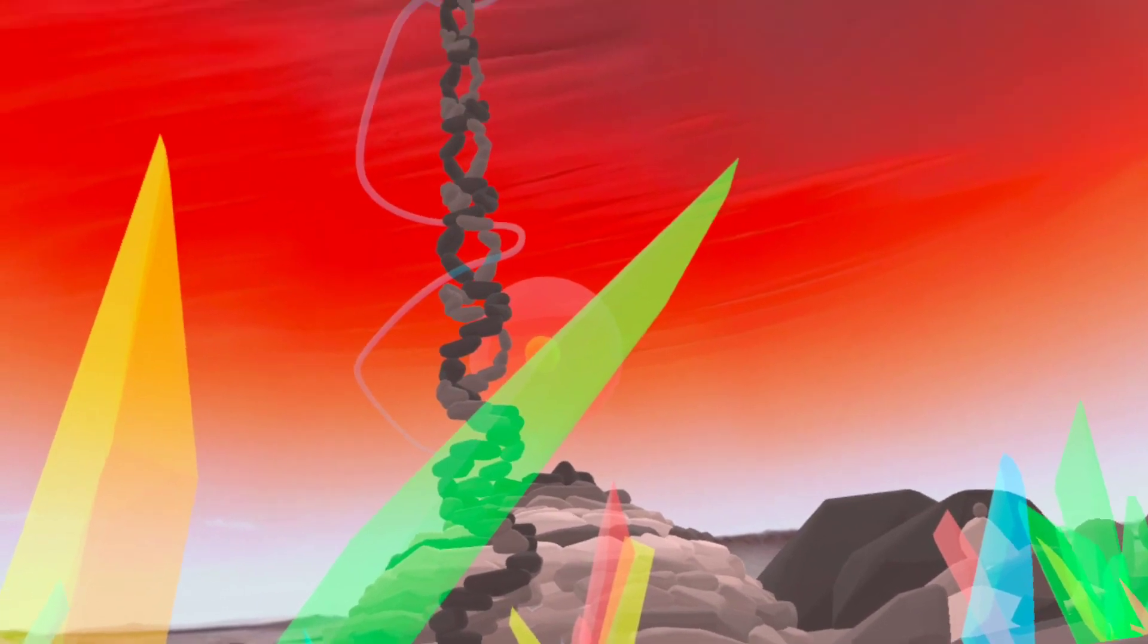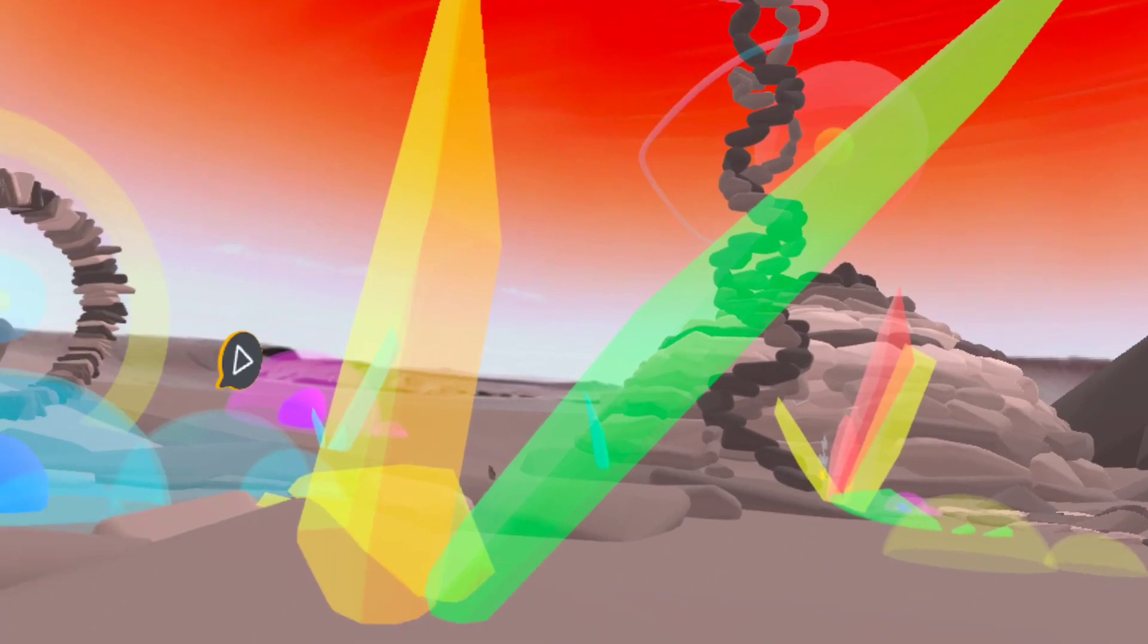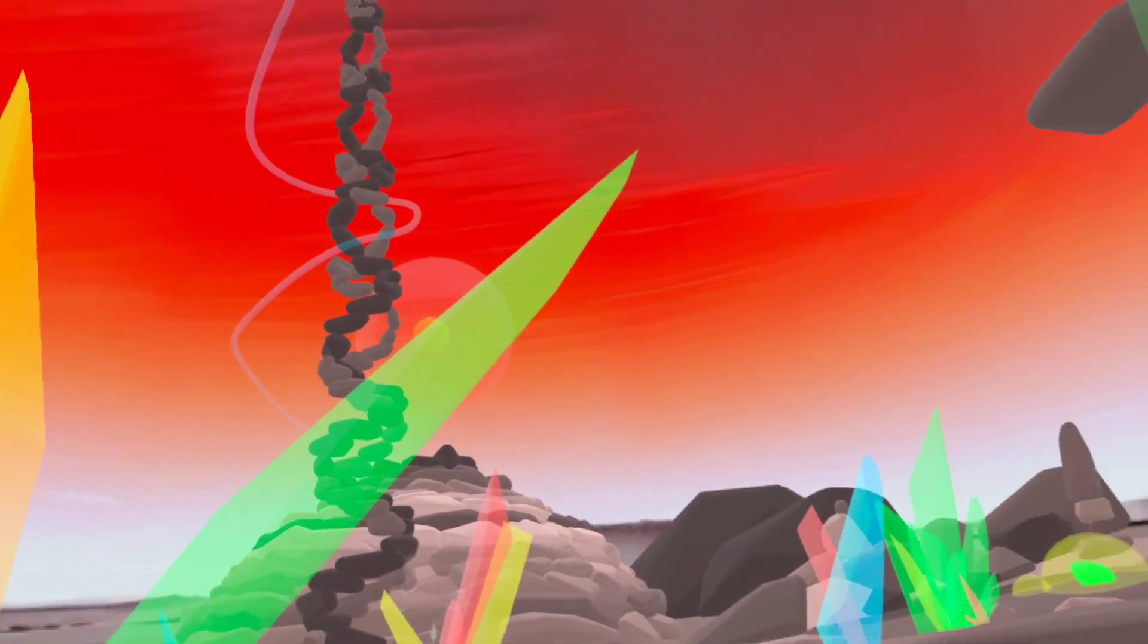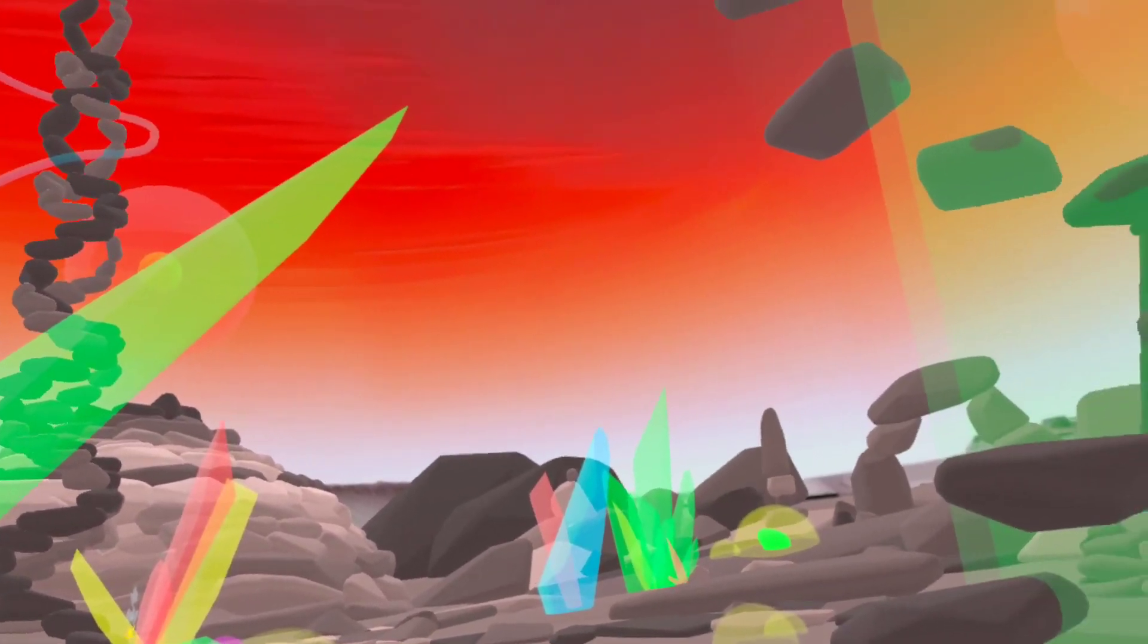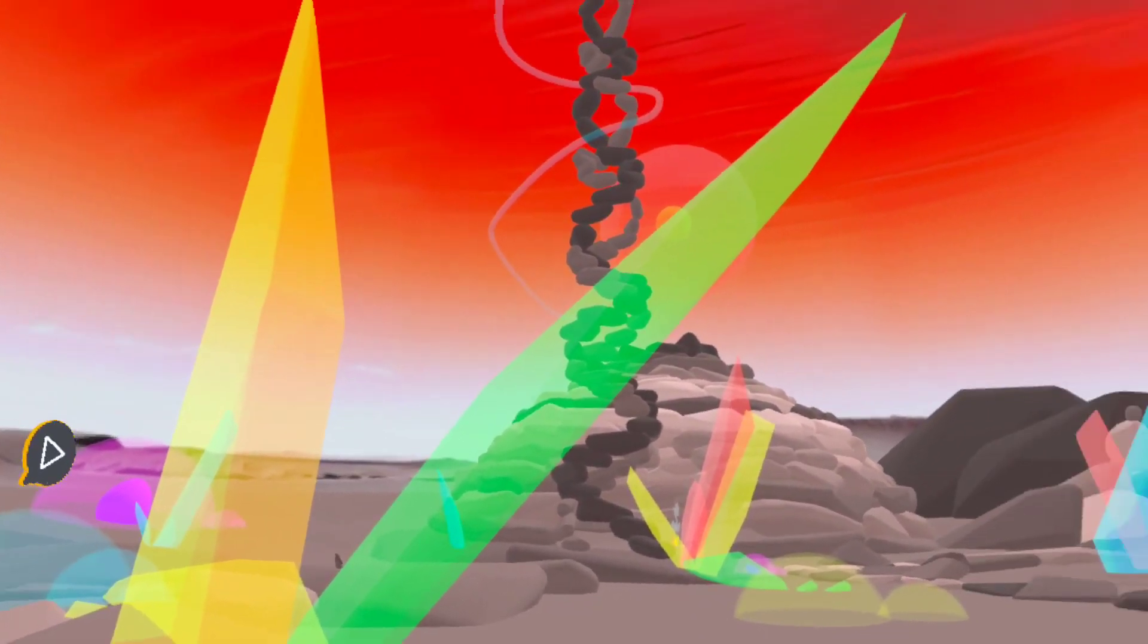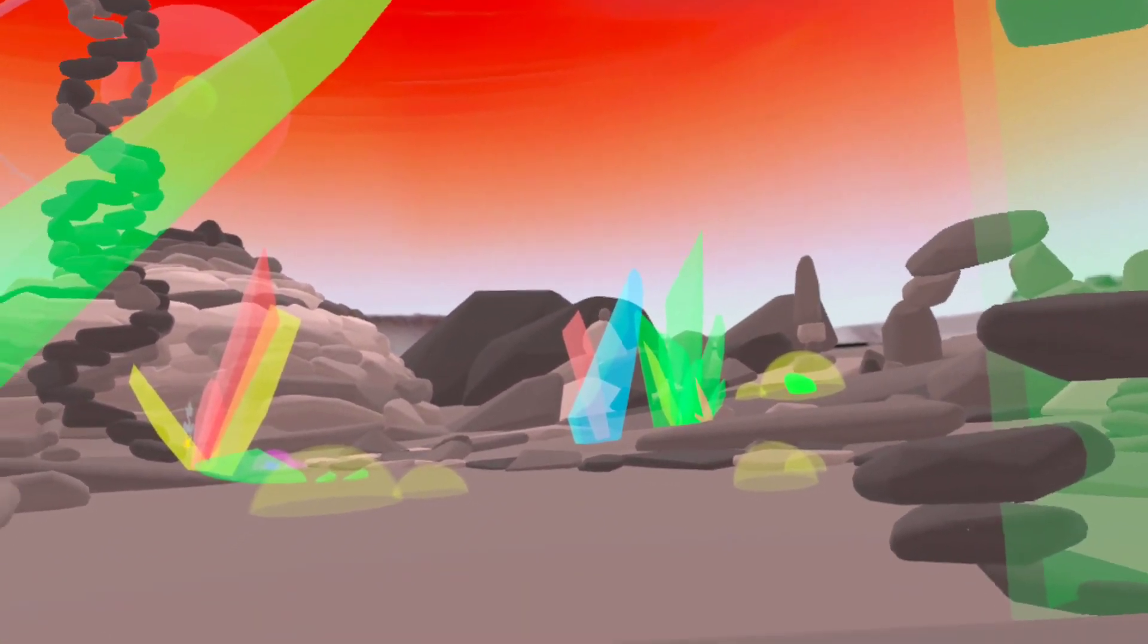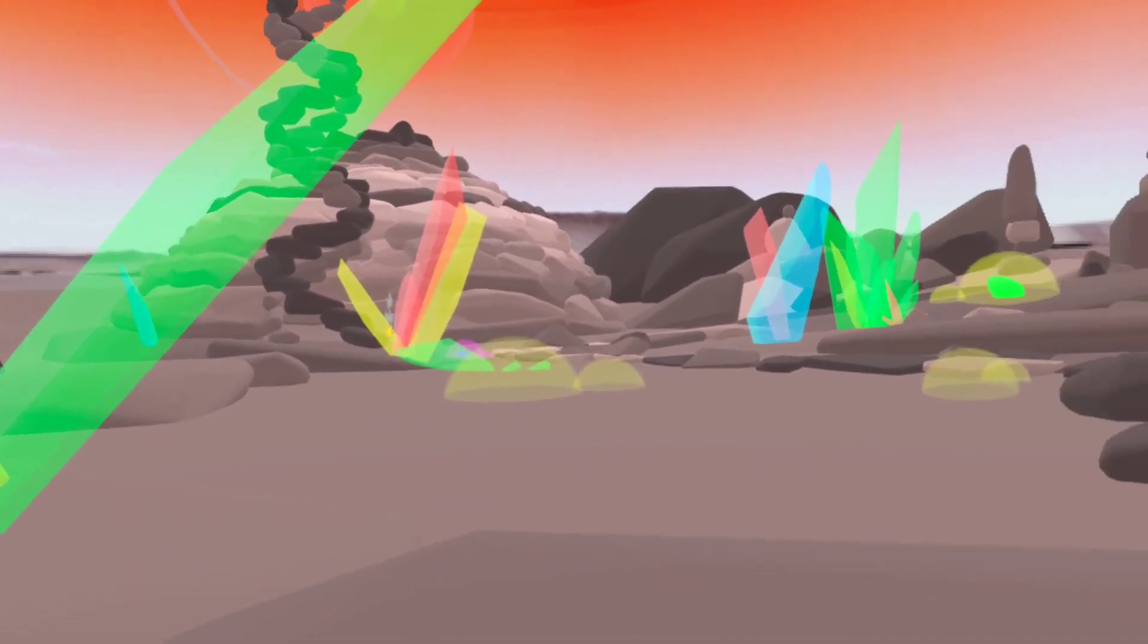The skybox was created with Blockade, which is an AI software available on the net, just quickly creating a kind of Martian kind of sky to give atmosphere to this space. I'm really looking forward to the new color palette that's coming to Shapes XR.